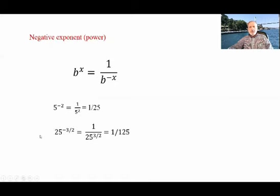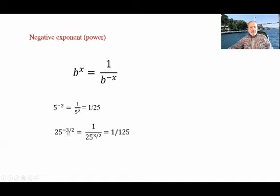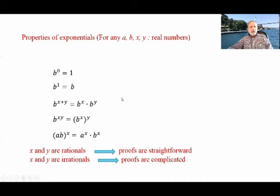Now, negative exponents: b to the power x equals 1 over b to the power negative x. So 5 to the power negative 2 is 1 over 5 squared, which is 1/25. And 25 to the power negative 3/2 is 1 over 25 to the power 3/2, which equals 1/125 — we calculated 25 to the power 3/2 to be 125 earlier. Here are the properties of exponentials, which are important because we are going to use them for the properties of logarithms.